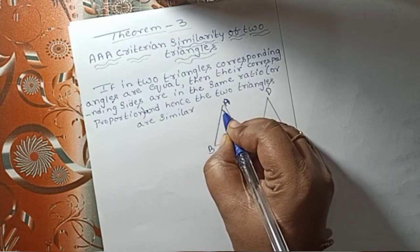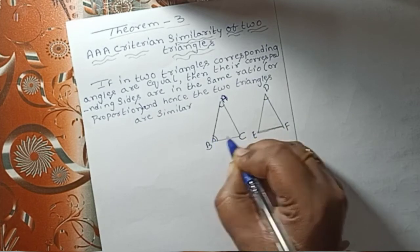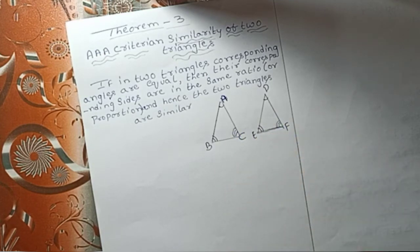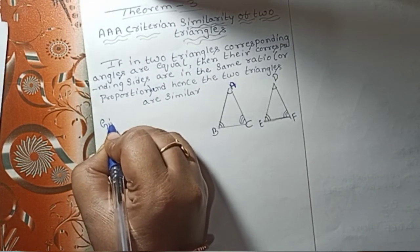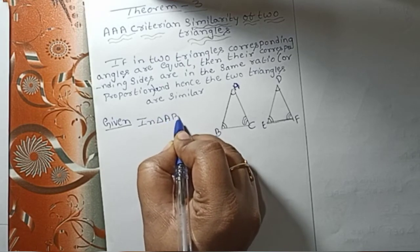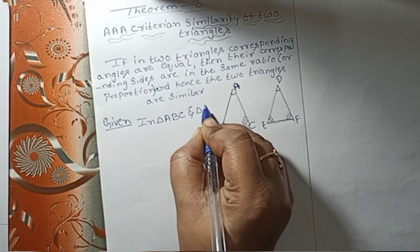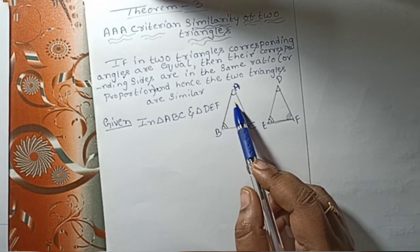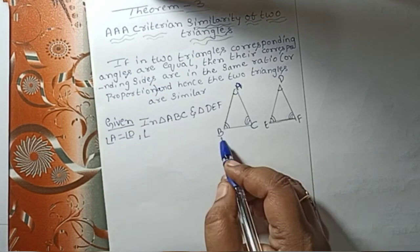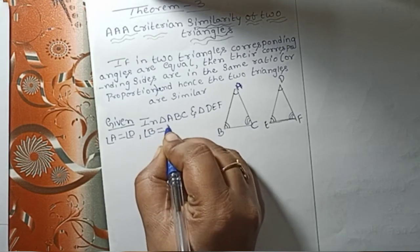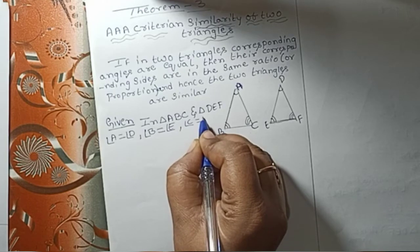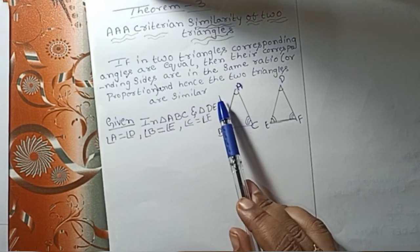The corresponding angles are equal. Angle A is equal to angle D, angle B is equal to angle E, and angle C is equal to angle F. This is given for triangles ABC and DEF.